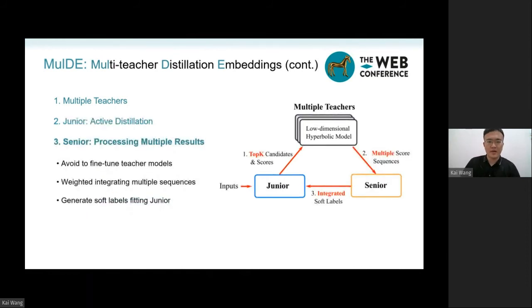The last component of the model is a novel senior student component. The student mentioned before we call it a junior student component. The senior is not a KGE model, but a score sequence encoder to process multiple results from teachers.